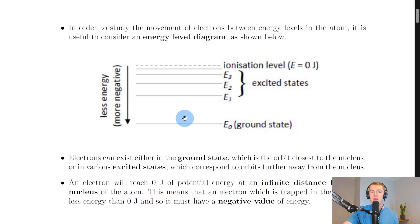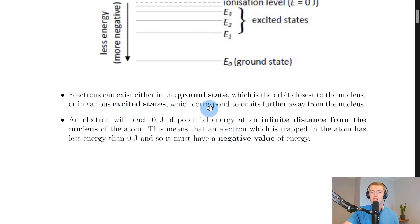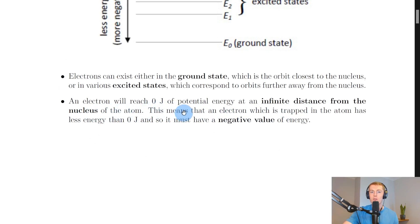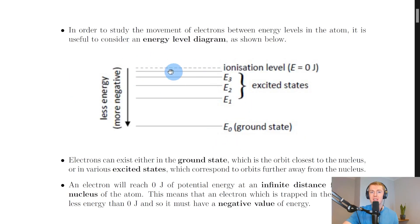You might also notice the different gap sizes between the different energy levels, which is common to see in questions. On the left, an arrow shows that we have less energy going downward — the energy levels get more negative as you go down. Electrons can exist either in the ground state, which is the orbit closest to the nucleus, or in various excited states corresponding to orbits further away. An electron will reach zero joules of potential energy at an infinite distance from the atom, meaning an electron trapped in the atom has less than zero joules — a negative value of energy.